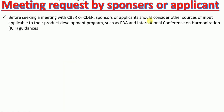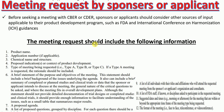Before seeking a meeting with CDER, a sponsor or applicant should consider other sources of input applicable to their product development program, such as FDA and International Conference on Harmonization guidances. If a meeting is still needed, the meeting request should include: product name and application number; chemical name and structure; proposed indications or context of product development; type of meeting requested (Type A, B, or C); and a brief statement of purpose and objectives of the meeting. This statement should include brief background of the underlying issues, a summary of completed or planned studies and clinical trials, and the data the sponsor or applicant needs to discuss.